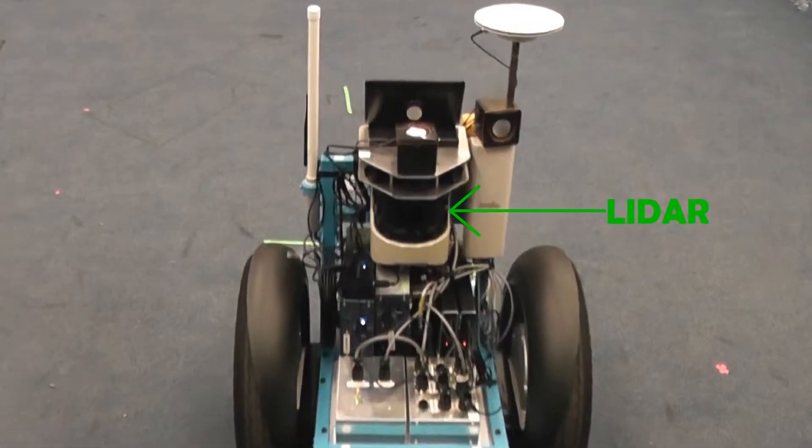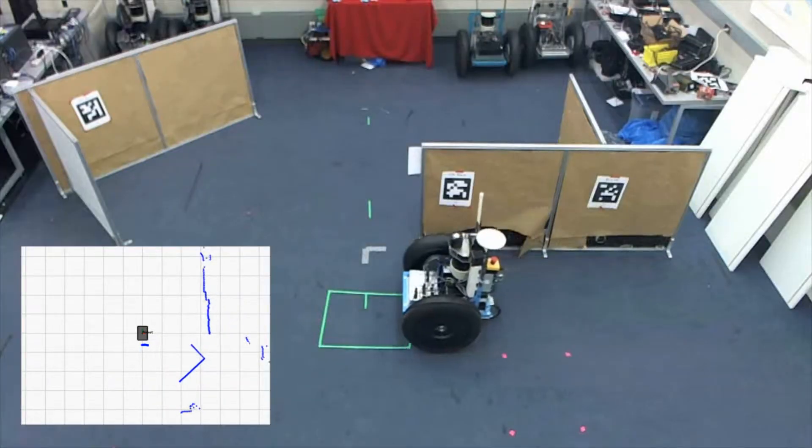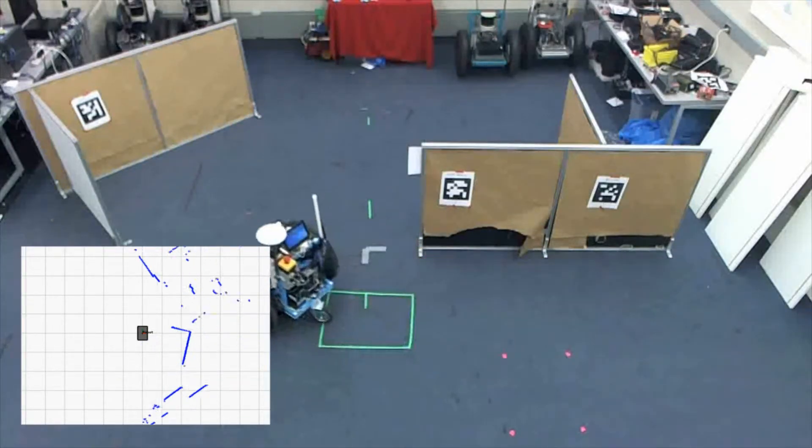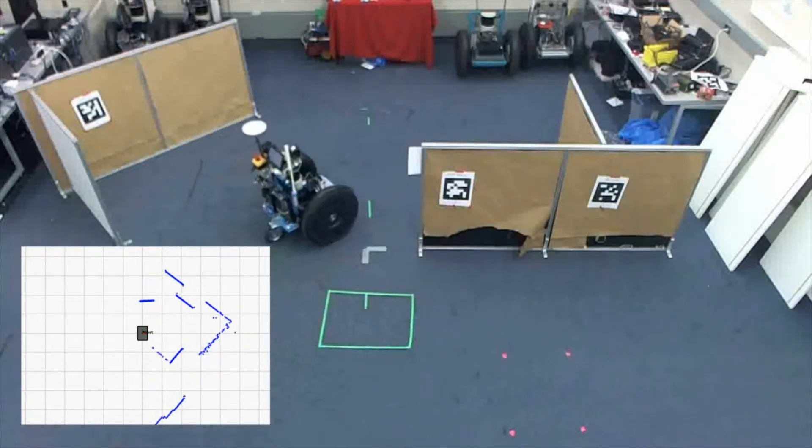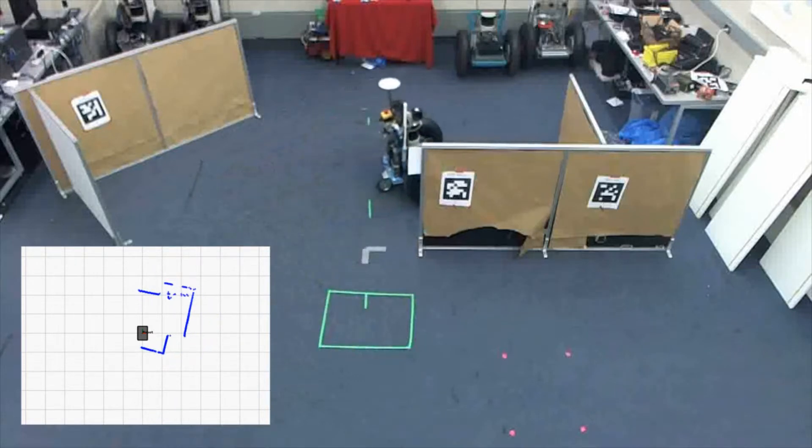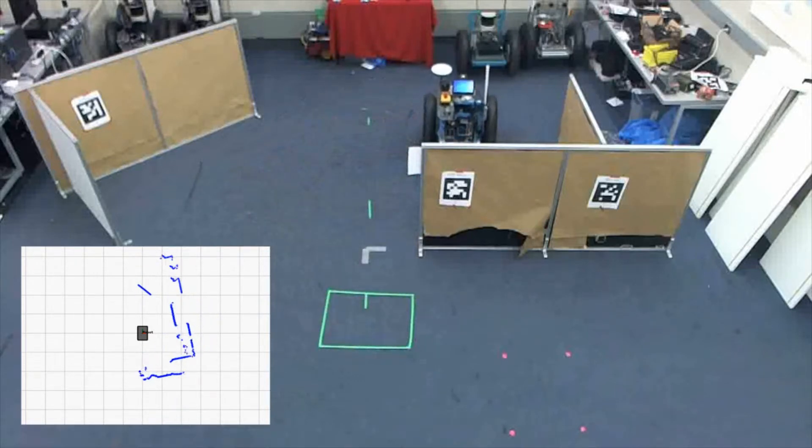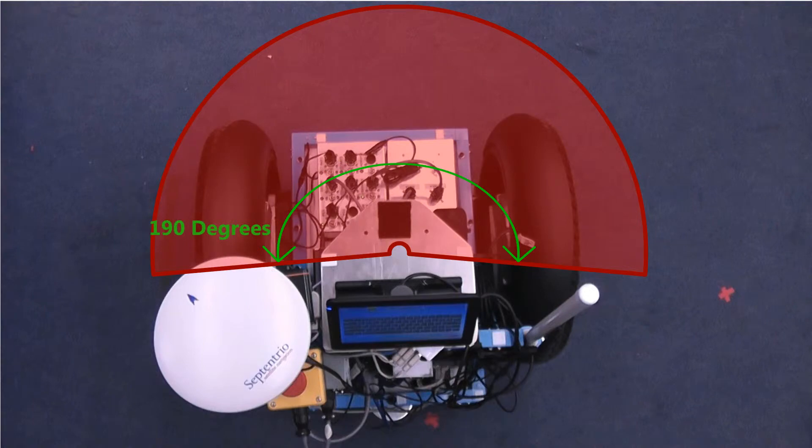The LiDAR is a laser range finder. It uses lasers to determine the distances to objects around us, essentially creating a two-dimensional map of our surroundings. It has a 190-degree field of view and a range of up to 80 meters.